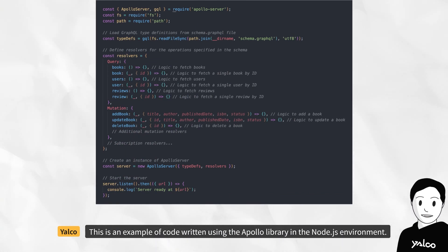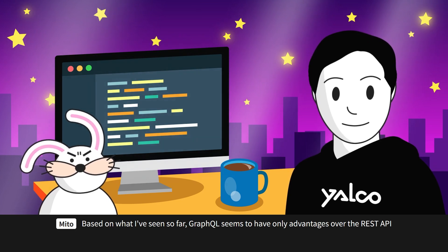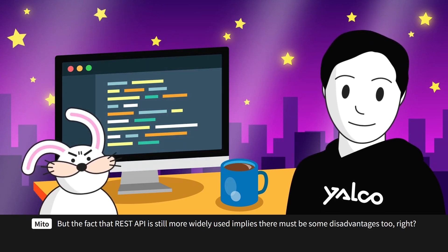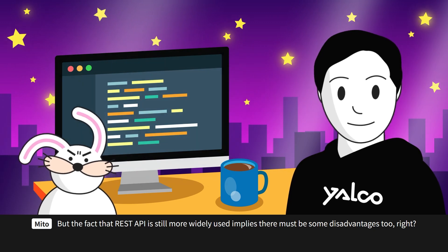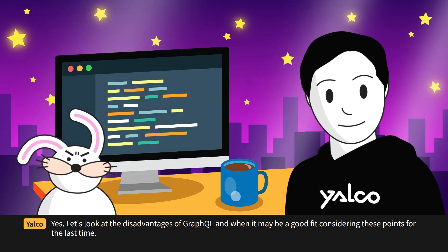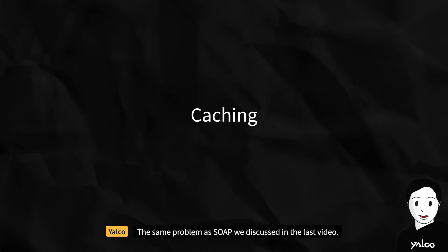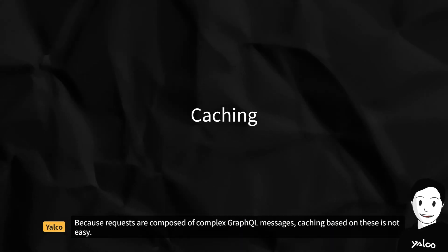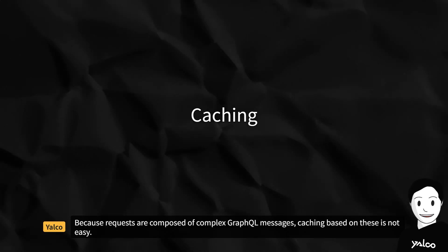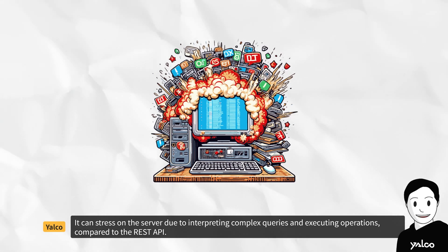Based on what we've seen, GraphQL seems to have only advantages over REST API. But the fact that REST API is still more widely used implies there are disadvantages too. The first is caching — the same problem as SOAP. Because requests are composed of complex GraphQL messages, caching based on these is not easy. The second is a performance issue: interpreting complex queries and executing operations can stress the server compared to REST API.